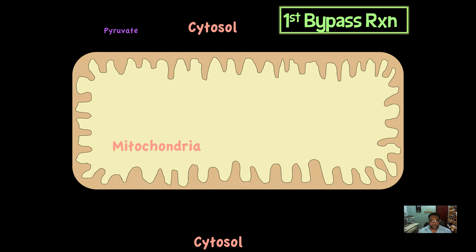To understand gluconeogenesis we need to talk a lot about glycolysis, and that's why you need to know both of them inside out. In glycolysis all the enzymes were found in the cytosol. Well, in gluconeogenesis it's slightly different — some of the enzymes are mitochondrial enzymes and some of the enzymes are cytosolic.